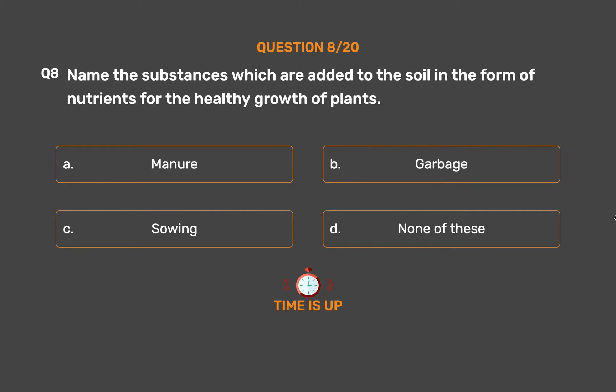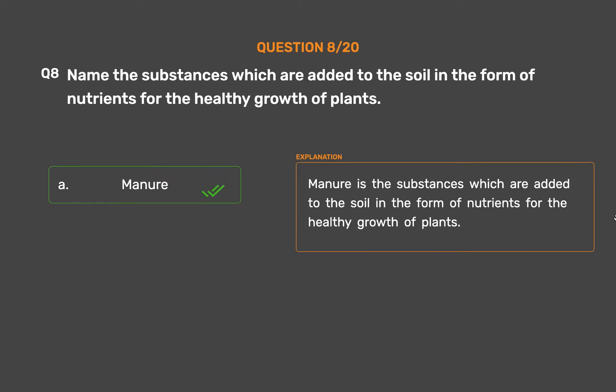The correct answer is Option A: Manure. Manure is the substance which is added to the soil in the form of nutrients for the healthy growth of plants.